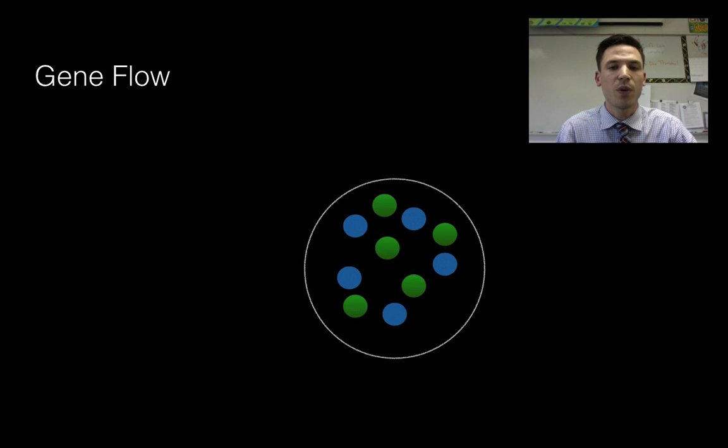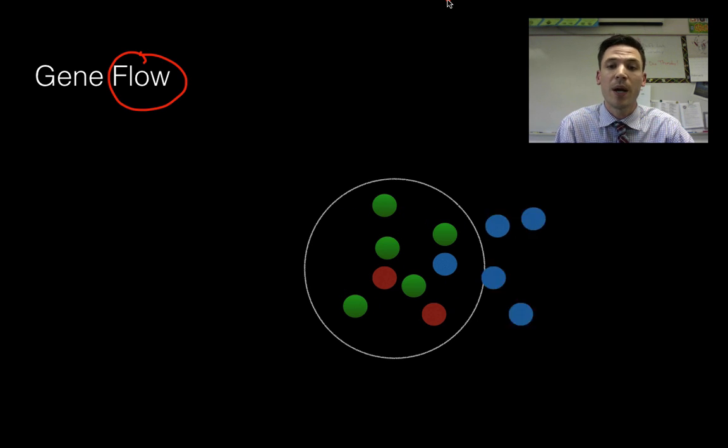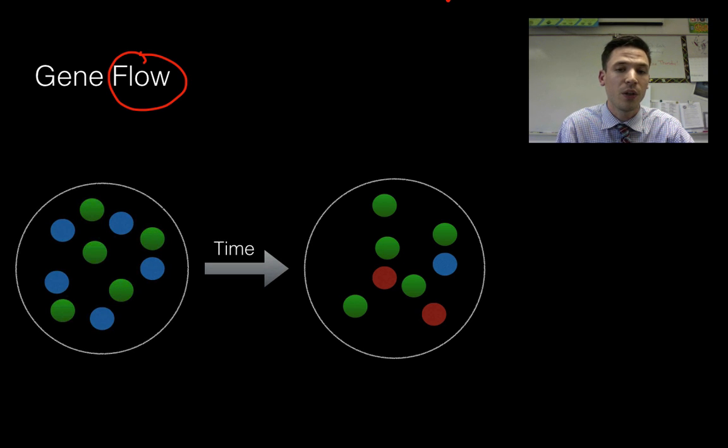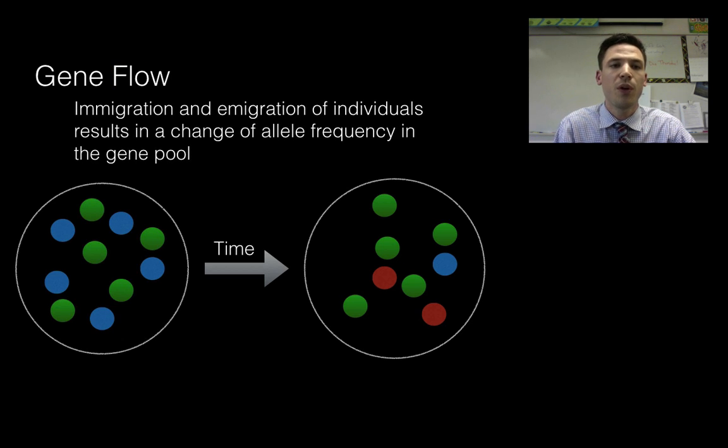Another way we can get a change in allele frequency is through what we know as gene flow. So this is not the same as genetic drift. Think about this word flow. To flow means to be able to move. So in gene flow, what's going to happen is we can get alleles moving into and out of my population. Here's my starting population. What if some red ones decide they're going to move in? So now I've got a change in my allele frequency. That's evolution. Maybe some of my blue ones move out. That also can change my allele frequency. So gene flow is going to be immigration and emigration, moving in and moving out of individuals. It's going to result in a change in that allele frequency.